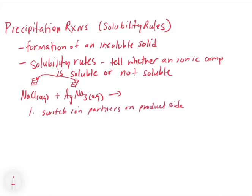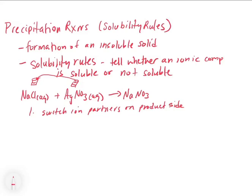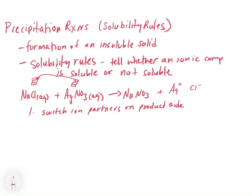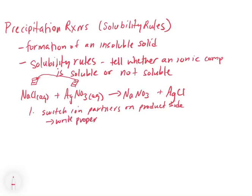So we're going to take the Na and we're going to switch it with the NO3. When you do this, you have to write a proper ionic compound. So remember, Na is plus and NO3 is minus. You have to do your crisscross method — in this case it's a one-to-one ratio, so you write NaNO3. Then we have silver put together with chloride. Silver is plus and Cl is minus, so we do our crisscross and that gives us silver chloride, also a one-to-one ratio. You want to make sure you write proper ionic compounds and that you balance.